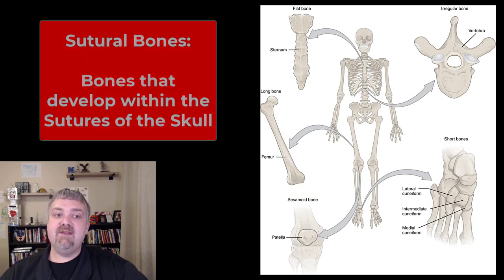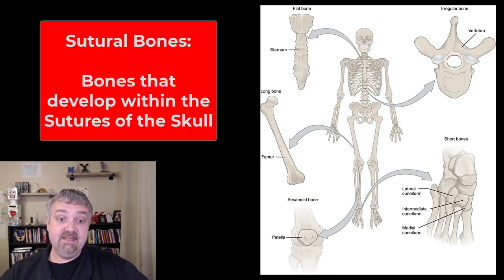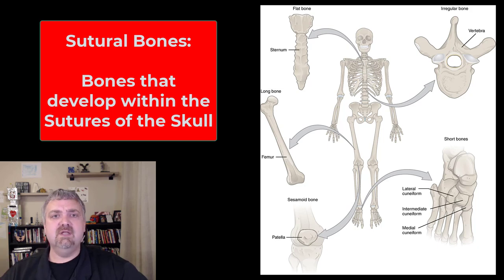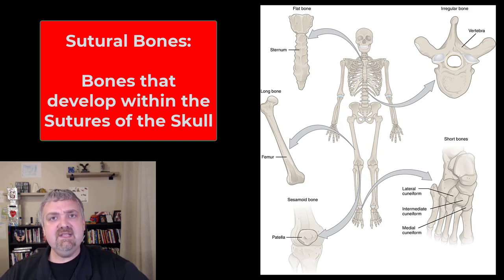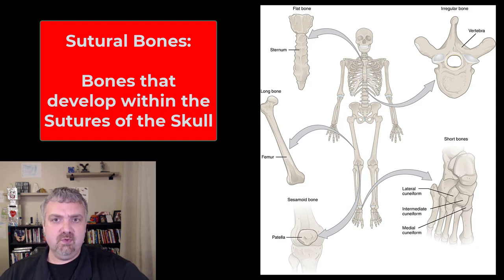The sixth one is called sutural bones. Like the name implies, these are small irregular bones that can develop in sutures between your cranial bones.